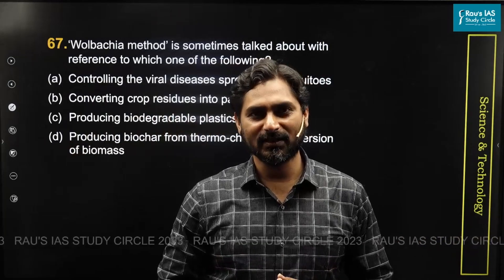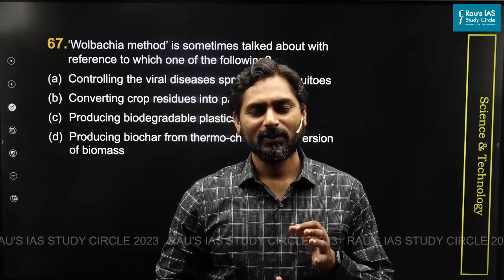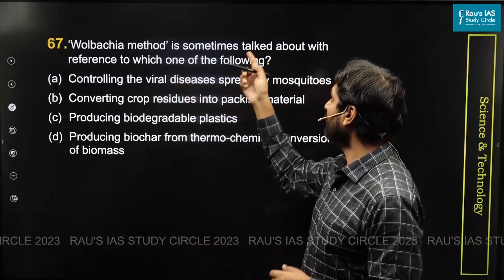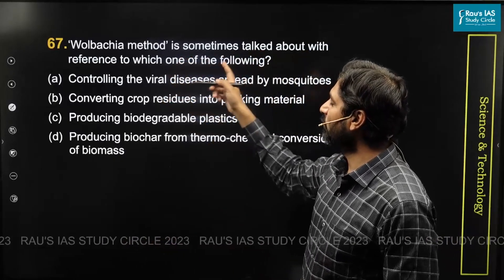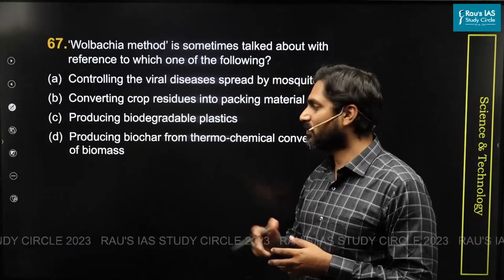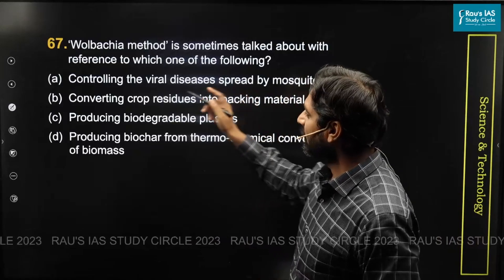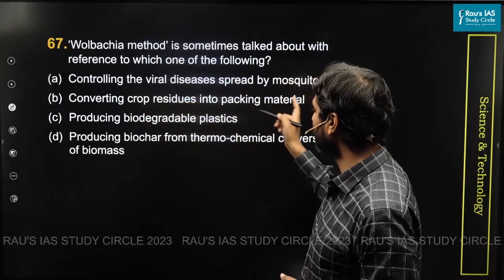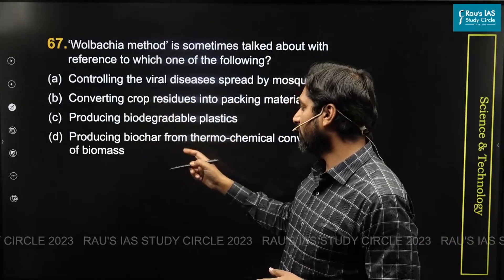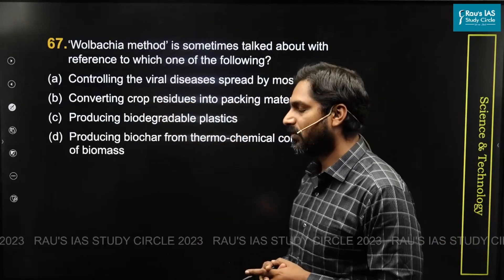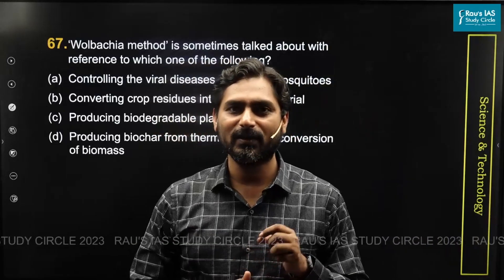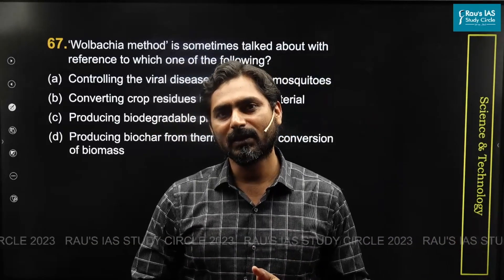Question number 67 asks: the Wolbachia method is sometimes talked about with reference to which one of the following? Options are: controlling the viral disease spread by mosquitoes, converting crop residues into packing material, producing biodegradable plastics, or producing biochar from thermochemical conversion of biomass. The Wolbachia method has become very popular because it is one of the biological ways to control vector-borne diseases.